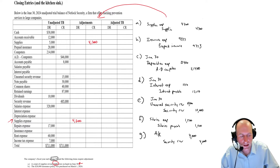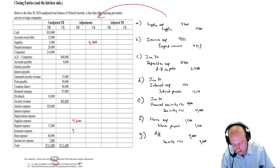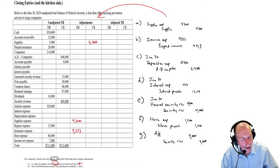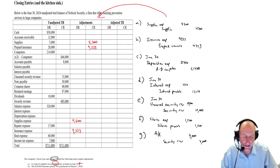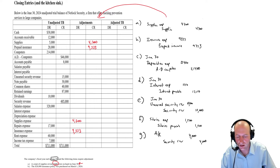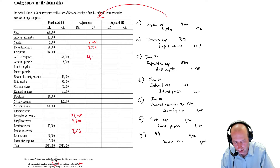Debit insurance expense, credit prepaid insurance, $9,333. I find my insurance expense — there it is — $9,333. And I credit prepaid insurance, $9,333. It's a little bit painstaking; you just got to be careful. Take your time here. Debit depreciation expense $21,400, credit accumulated depreciation computers $21,400.